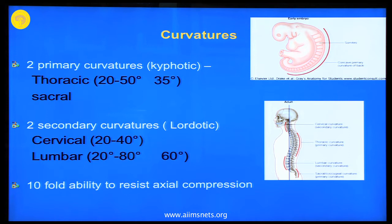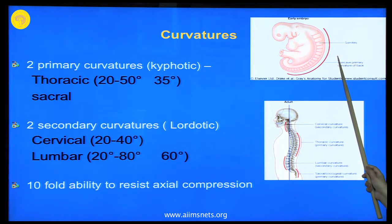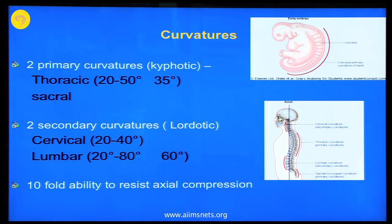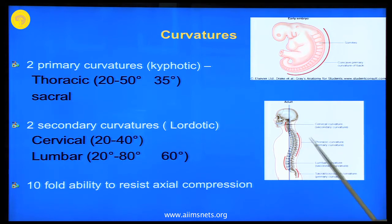The structure is a curved structure. In fetal life it is a single curve which is kyphotic, that is convex posteriorly. But as the child lifts his neck, the cervical spine curves anteriorly — this is called a lordotic curvature — and when the child begins to stand and walk, convexity appears anteriorly in the lumbar region, called the lumbar lordotic curve. The kyphotic curves are the fetal curves retained in the thoracic and sacral regions, whereas cervical and lumbar regions show lordosis. This curved arrangement gives a tenfold ability to resist axial compression and loads.